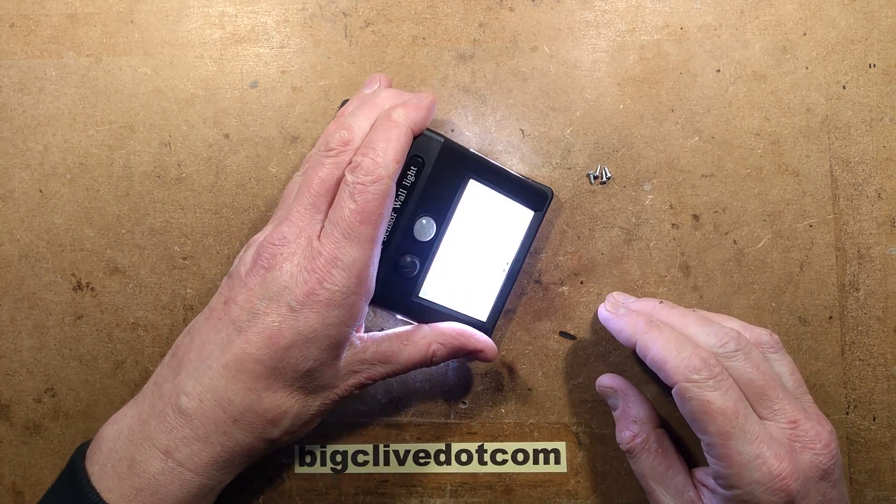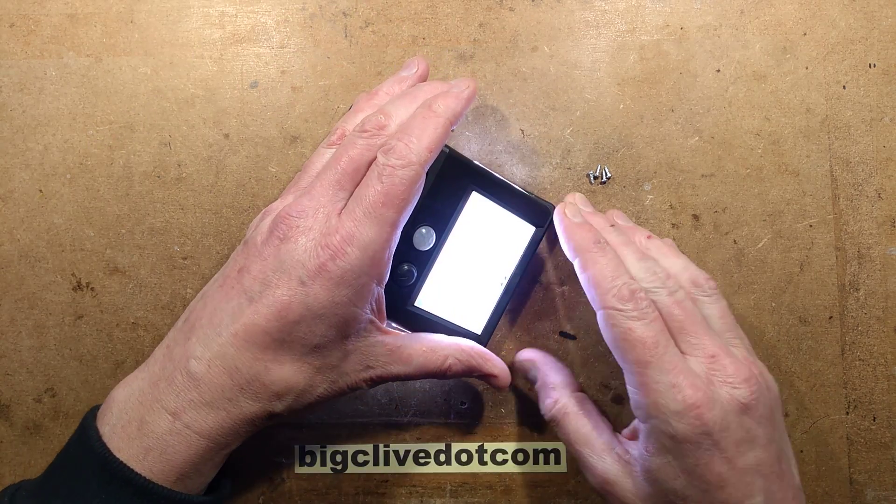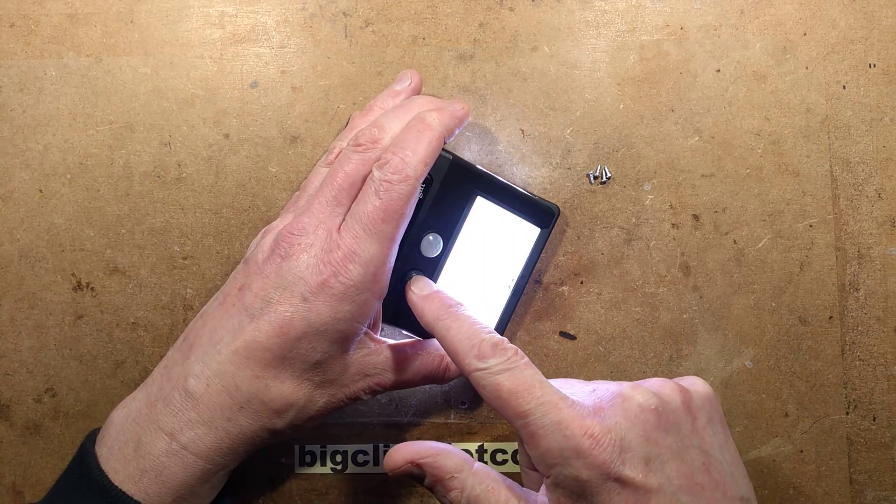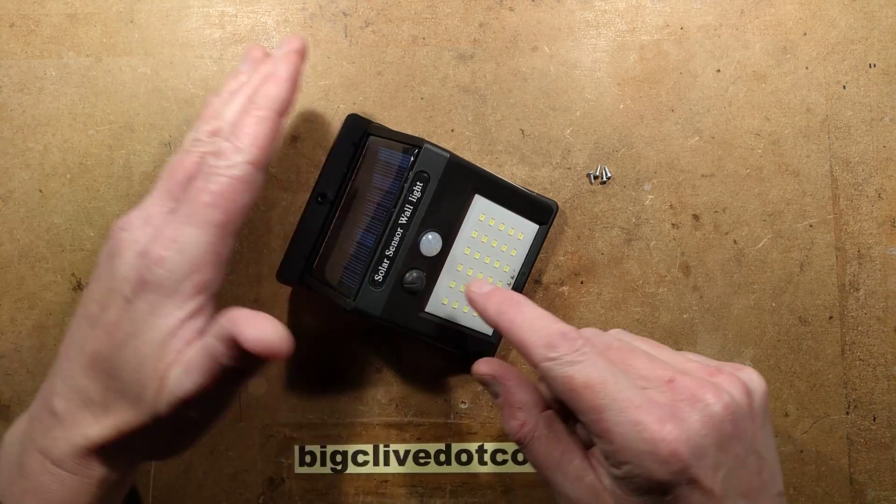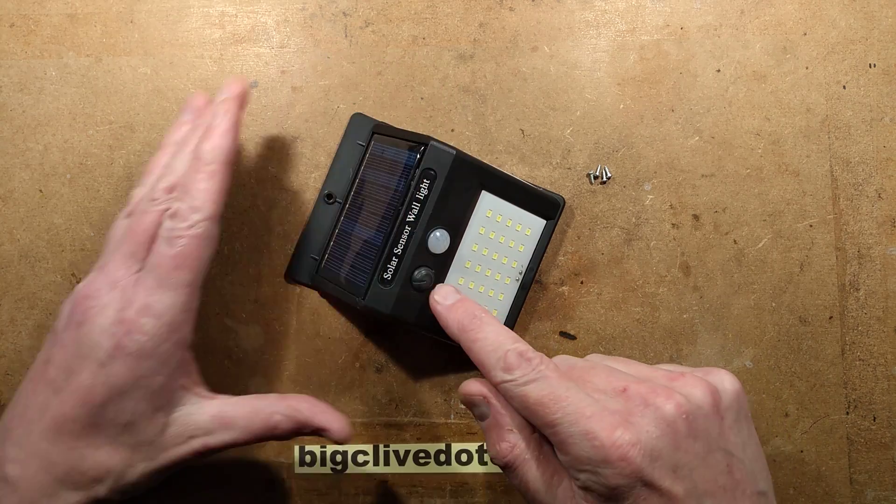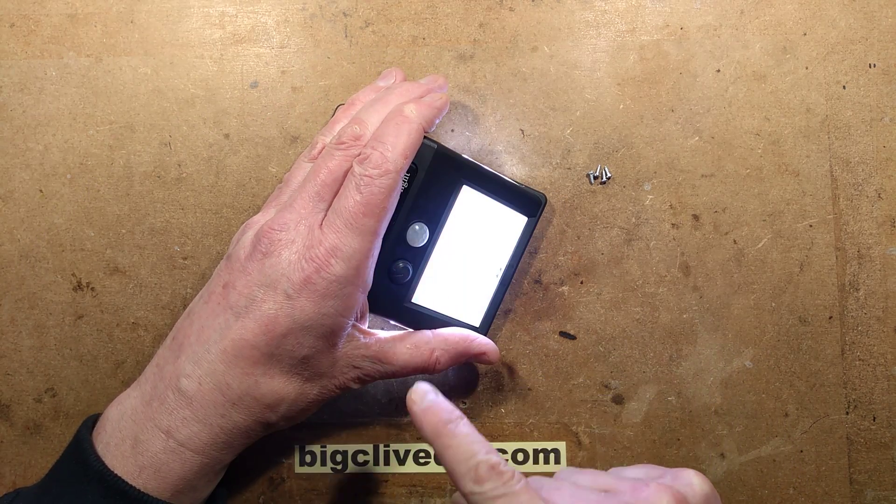Here's an oddity for a start. If you press it off now, it will only respond to that button when it's dark. At the moment, the unit's off and if you press the button it won't turn on, but it will when it's got the sensor covered.